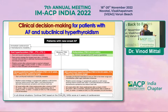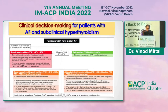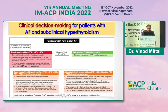If the patient is already euthyroid, nothing needs to be done for thyroid management — we treat AF as per the guidelines for chronic or acute-onset AF.